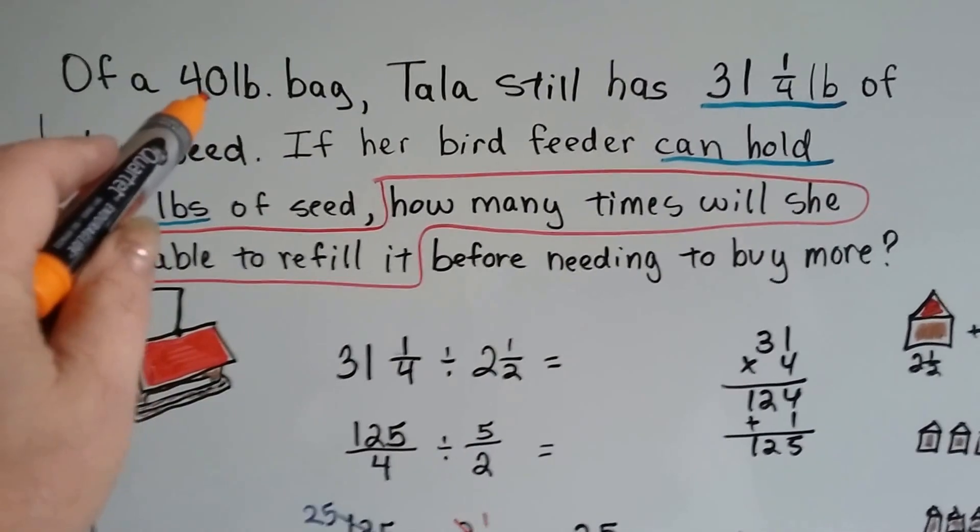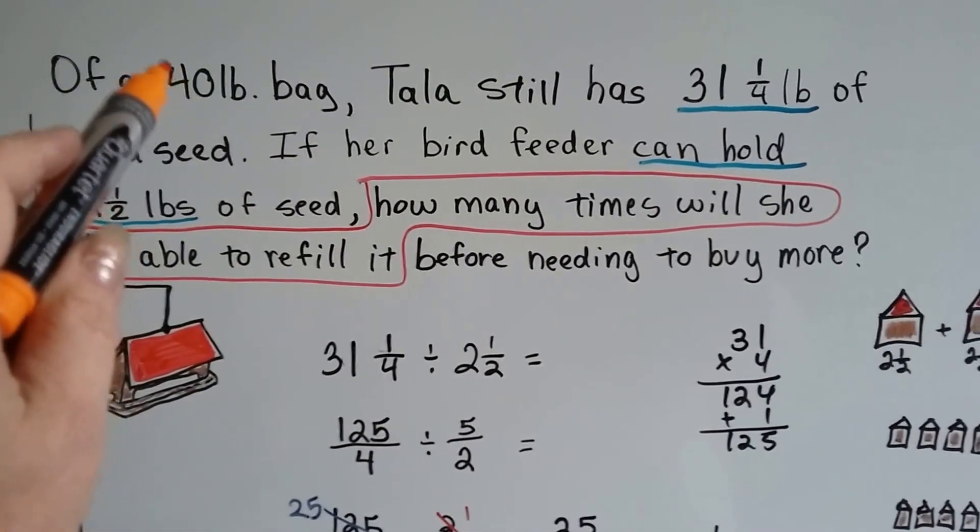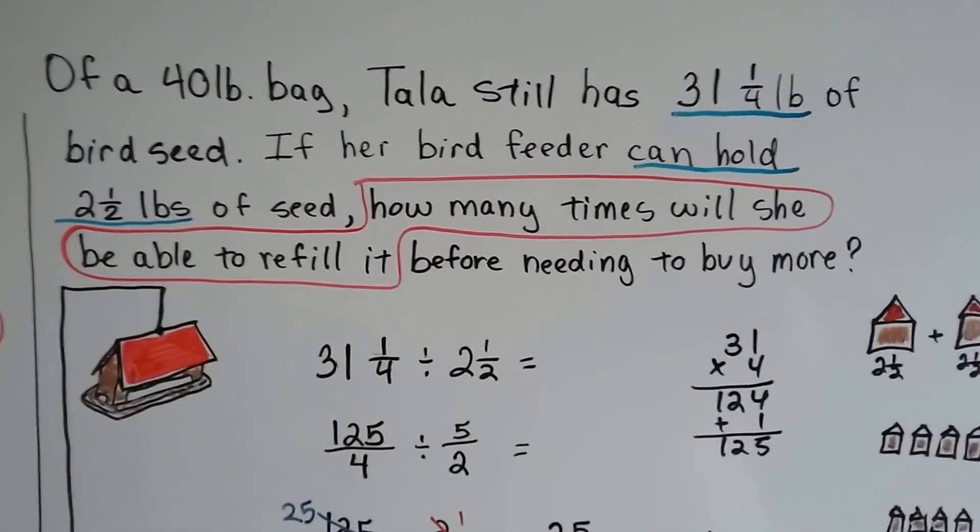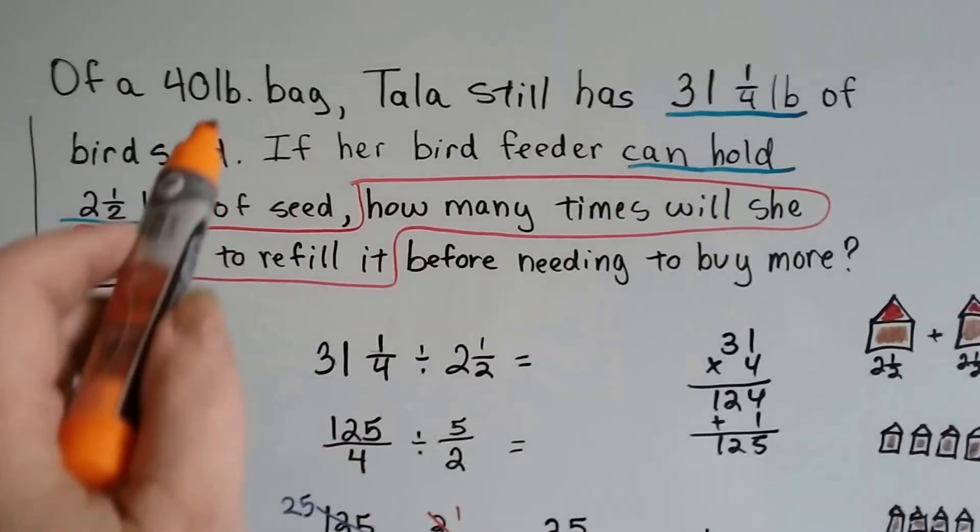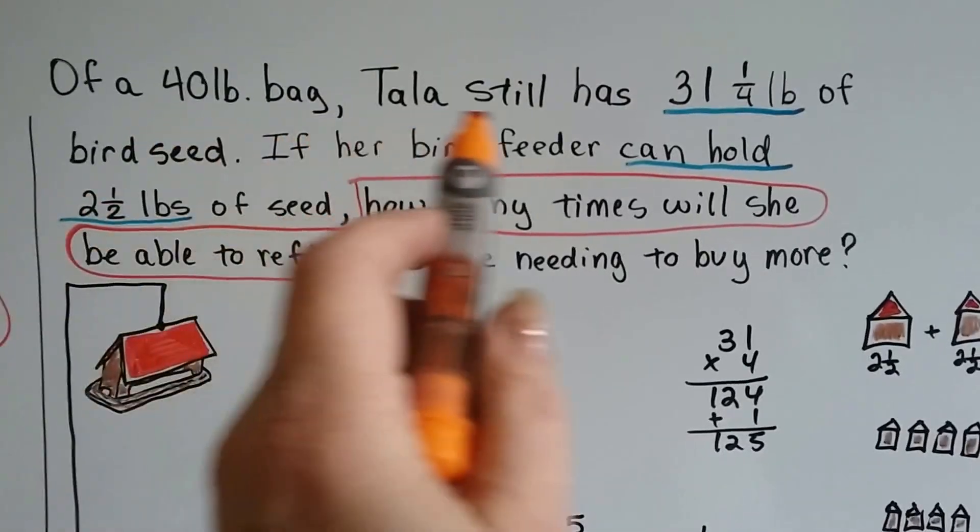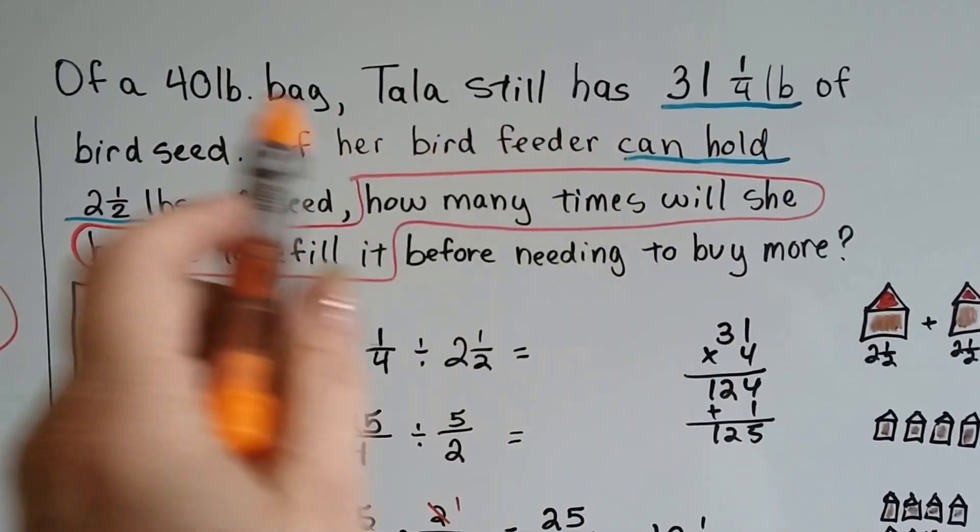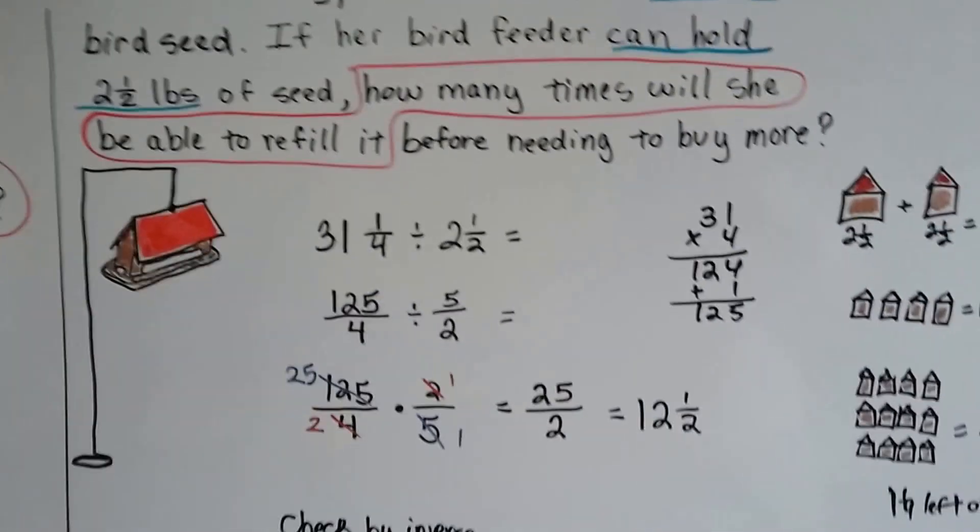Do you see how the forty pound bag could have confused us, and we might have thought that that was an important bit of information? It wasn't though, because that's what she had before. She still has that much, so that can confuse you.